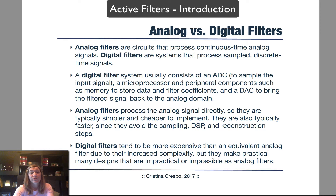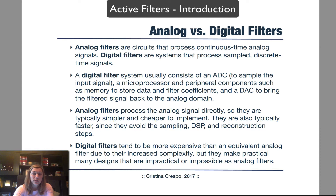Let's take a look at the different types of filters. One possible classification is to classify filters as analog versus digital. Analog filters are circuits that process analog signals, which are continuous-time signals. Whereas digital filters operate on digital signals, which are signals that have been sampled and digitized — converted into a digital form comprised of a sequence of ones and zeros.